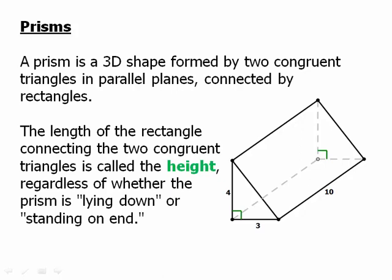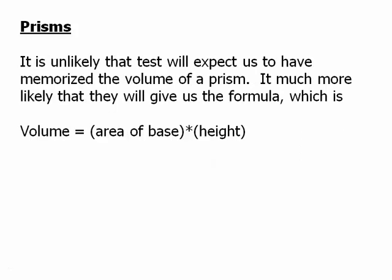The length connecting the two congruent triangles is called the height, regardless of whether the prism is lying down or standing up on end. It is unlikely that the test will expect you to have memorized the volume of a prism. It is much more likely they will give you the formula, which is volume equals area of the base times the height — in other words, area of the triangle times that long length.